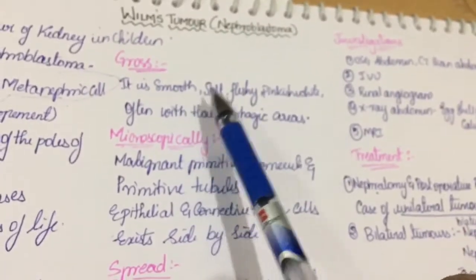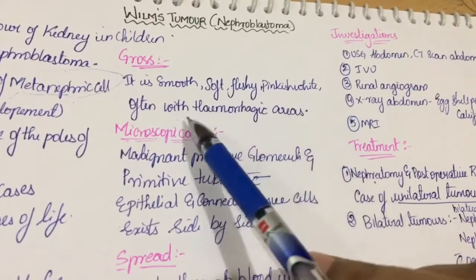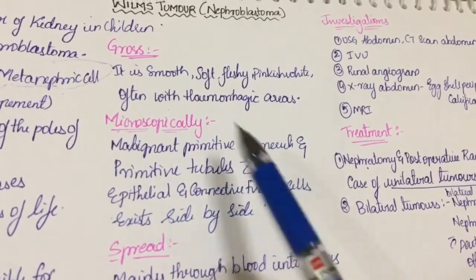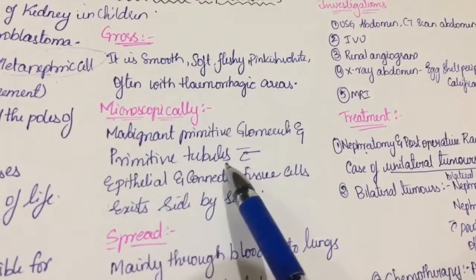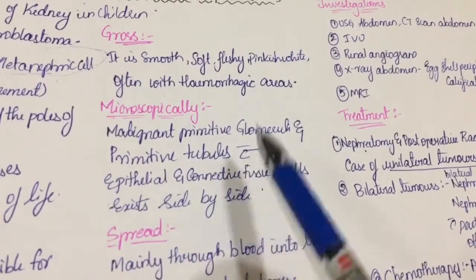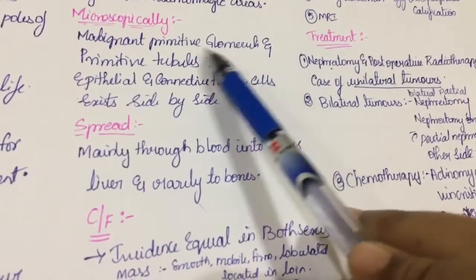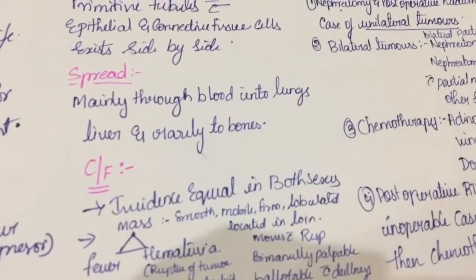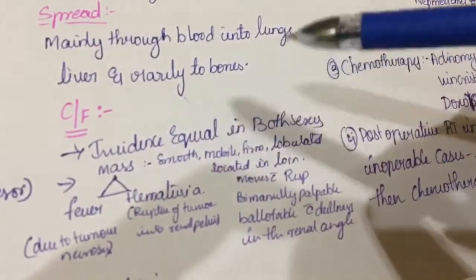Grossly, Wilms tumor is smooth, soft, fleshy, pinkish-white, often with hemorrhagic areas. Microscopically, there are malignant primitive glomeruli and primitive tubules. All cells are malignant — glomeruli cells, tubular cells, epithelial and connective tissue cells — which exist side by side. Spread is mainly through blood to the lungs and liver, and rarely to bones.